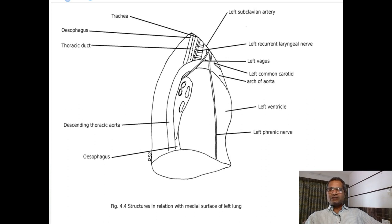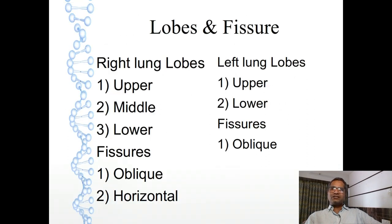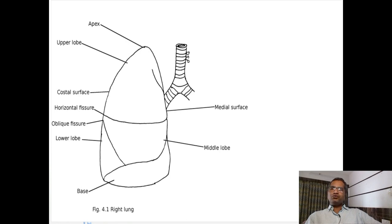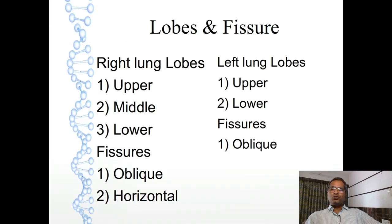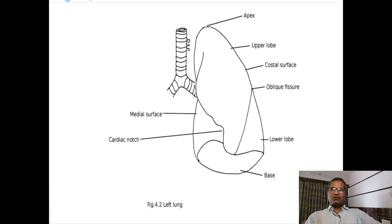Now next is lobes and fissures of lung. In right lung, three lobes are present: upper, middle, and lower. Two fissures are present: oblique and horizontal. In left lung, two lobes are present: upper and lower. One fissure is present - the oblique fissure.